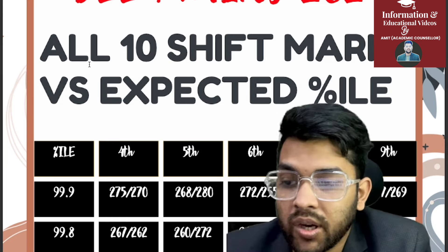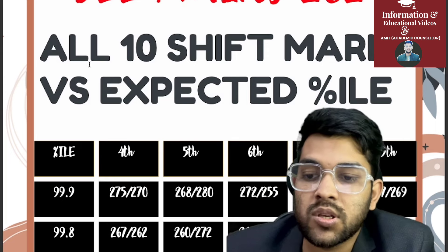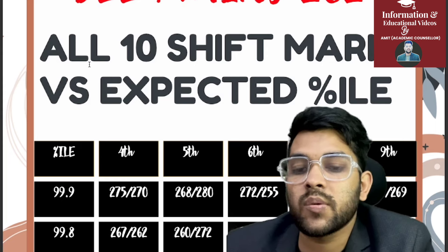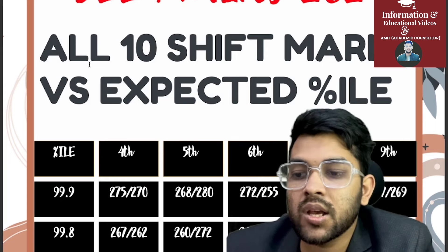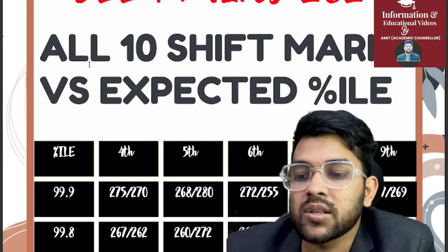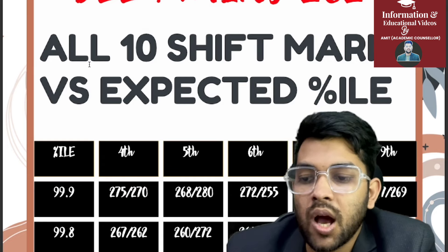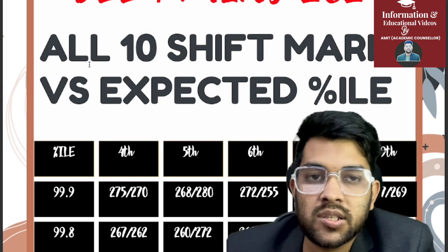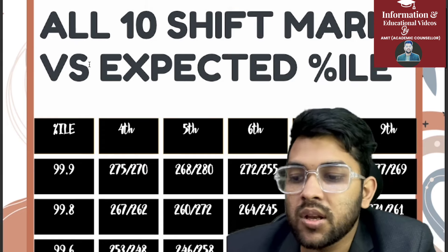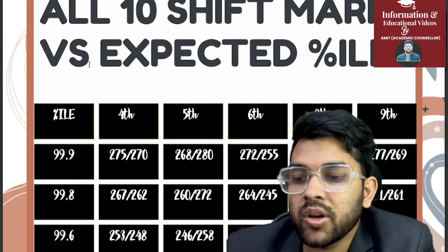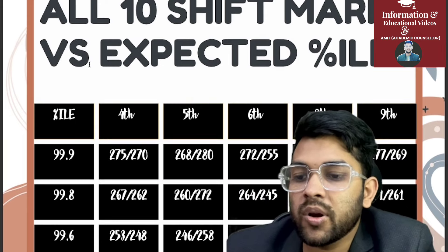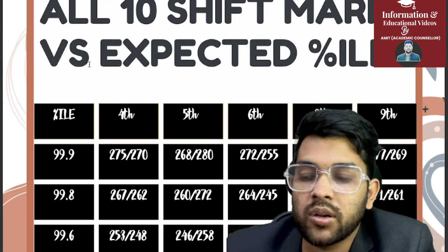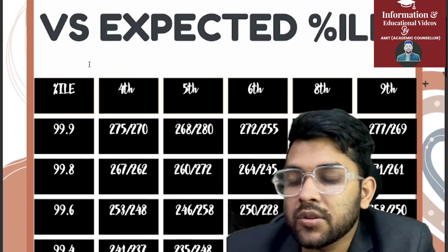For 99.9 percentile, the marks required are: 275 / 268 / 272 / 266 / 277 for the first shifts of each day. For 99.8 percentile, the second shift data shows: 267 / 260 / 264 / 250 / 271 respectively for the five examination days.